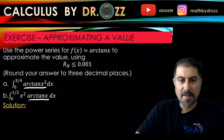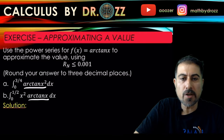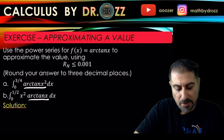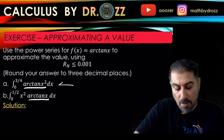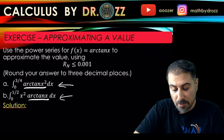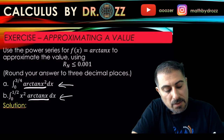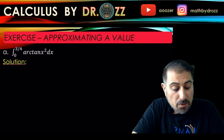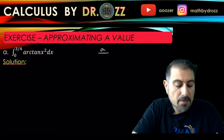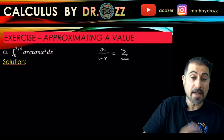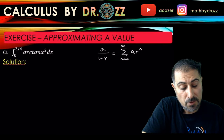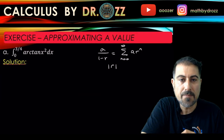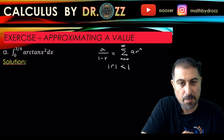Let's start. First of all we need the power series of arc tan x. We're going to use the power series of the geometric series: a over (1 − r) equals the sum of the geometric series, which converges when |r| < 1. That's one important thing to pay attention to.